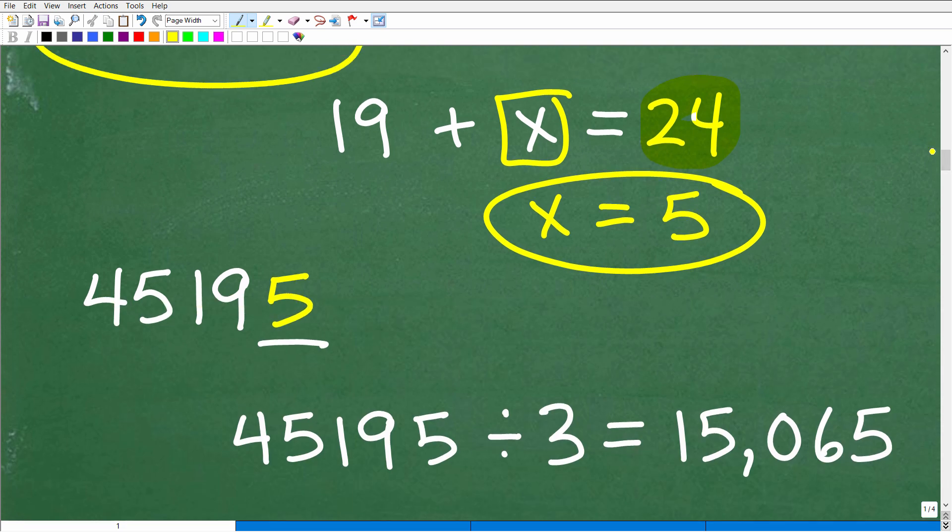But 5 works. So you can plug in 5 right here, and we get 4, 5, 1, 9, 5. And if you wanted to go into your calculator, just to verify this, you'll see that 45195 divided by 3 is 15,065. So we'll just call it a wrap right here. Just an illustration of the divisibility rule of 3.